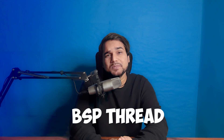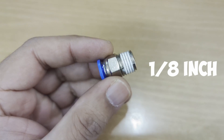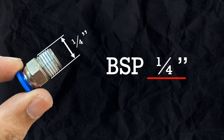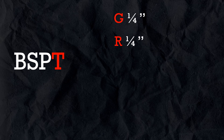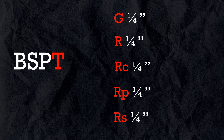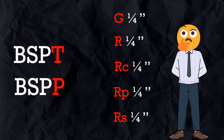Have you ever thought why do we use BSP thread in hydraulics, pneumatics, or any pipe connection like 1/4 inch, 1/8 inch, or 1 inch? Why do we denote sizes in inches? Are these inches the diameter of the thread? Why do we use BSPP thread in hydraulics and BSPT thread in pneumatics? This is Ayus from Master Mechanical Design and today we will deeply understand the BSP thread standard and its applications so you will have no confusion in selecting the right BSP thread for your design.